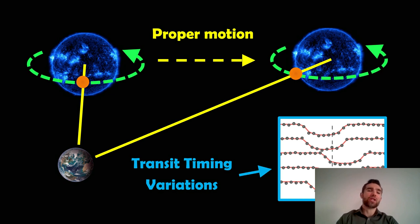I want to go back to the transit method for detecting exoplanets and have a look at something that can actually change the timing of those transits. Because if we have a single planet on an orbit around a star, we would expect the time between each transit to be the same. But that isn't always the case.